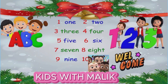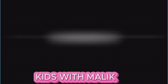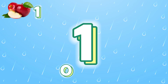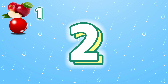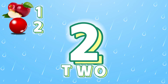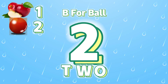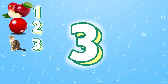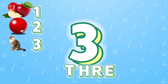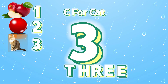Welcome to my channel Kids with Malik. 1 - ONE. A for Apple. 2 - TWO. B for Ball. 3 - THREE. C for Cat.